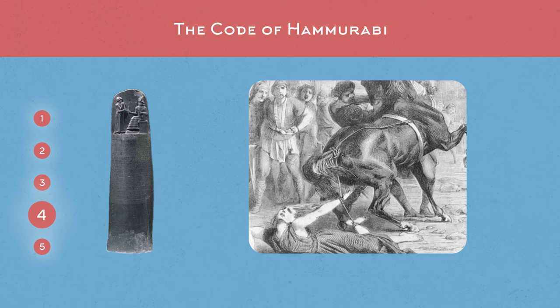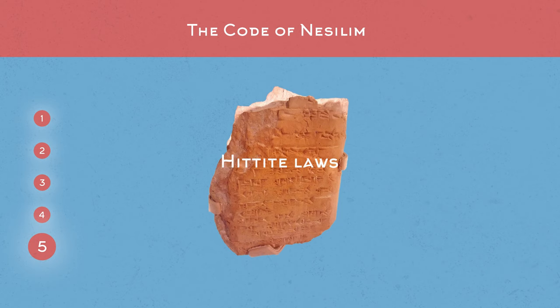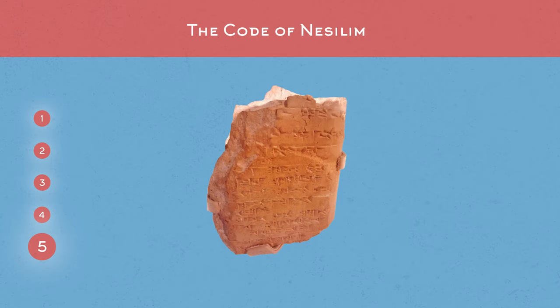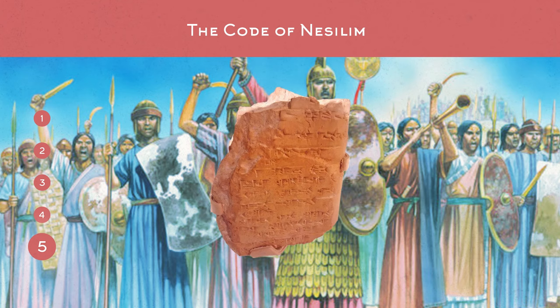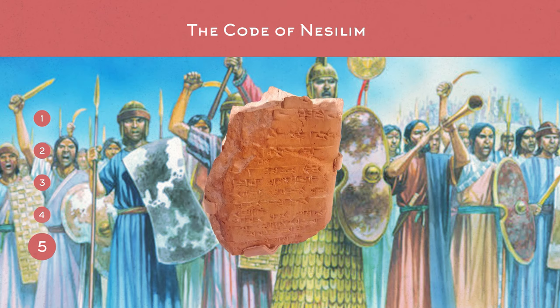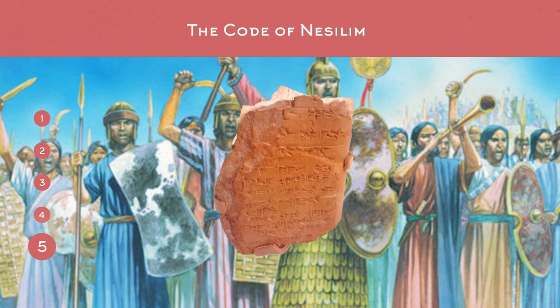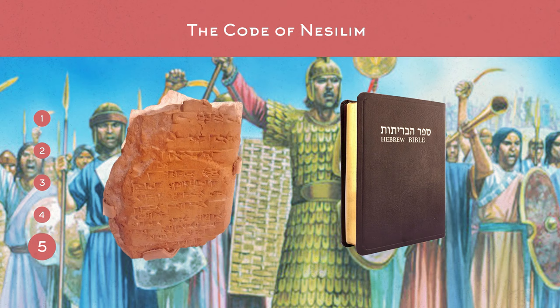Finally, also known as the Hittite laws, the Code of Nesilim is the last of the most ancient tablets we'll look at in this video. Several tablets have established the code contained at least 200 laws dating back to 1650 to 1500 BC. Later existing copies suggest that this code, or parts of it at least, were in effect all the way up to the end of the Hittite Empire in 1100 BC. Some historians also argue that many of the laws laid down in the Hebrew Bible a few hundred years later were initially derived from the Code of Nesilim.